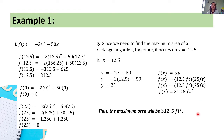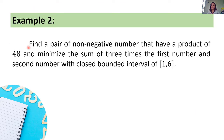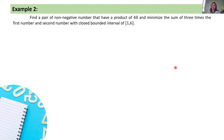That's example number 1. Now let's proceed with example number 2. Find a pair of non-negative numbers that have a product of 48 and minimize the sum of 3 times the first number and the second number, with a closed bounded interval of [1, 6].